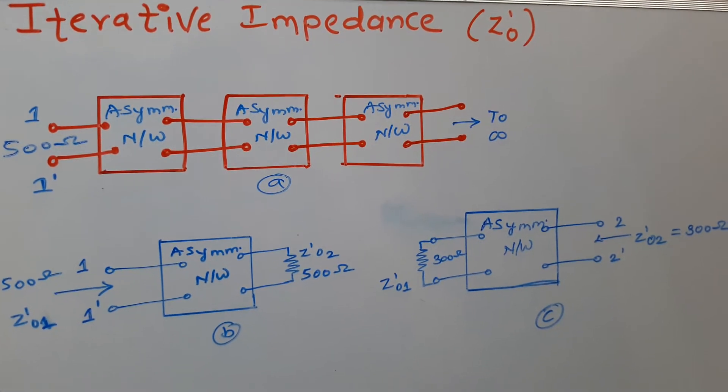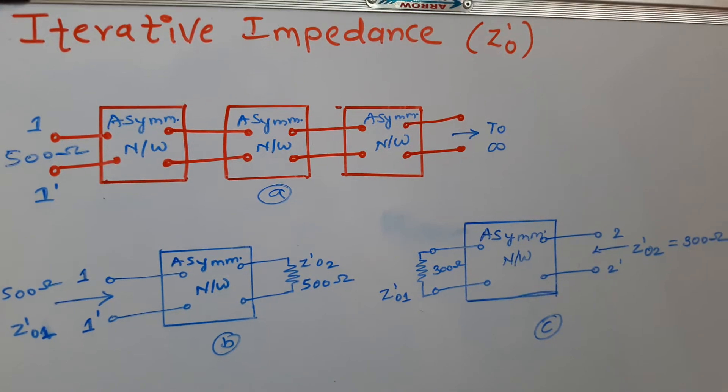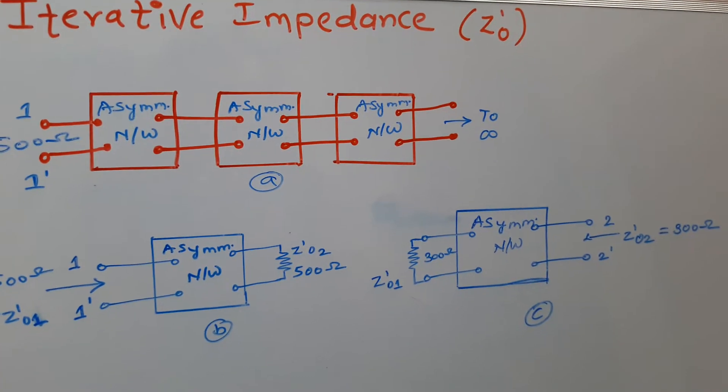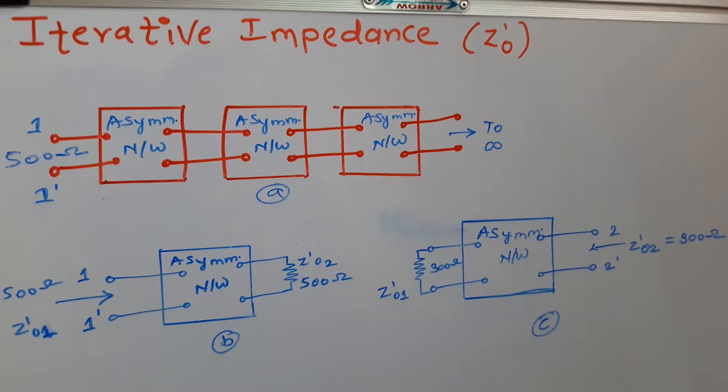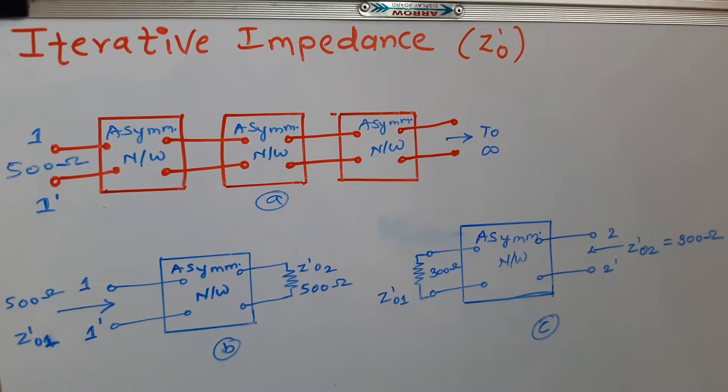Iterative impedance for asymmetrical networks. If infinite number of asymmetrical networks are connected in series as shown in figure A